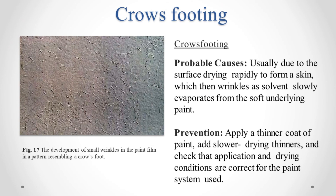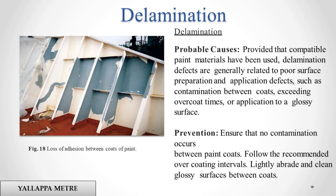Crows Footing. Probable causes: usually due to the surface drying rapidly to form a skin, which then wrinkles as solvent slowly evaporates from the soft underlying paint. Prevention: apply a thinner coat of paint, add slower drying thinners, and check that application and drying conditions are correct for the paint system used.